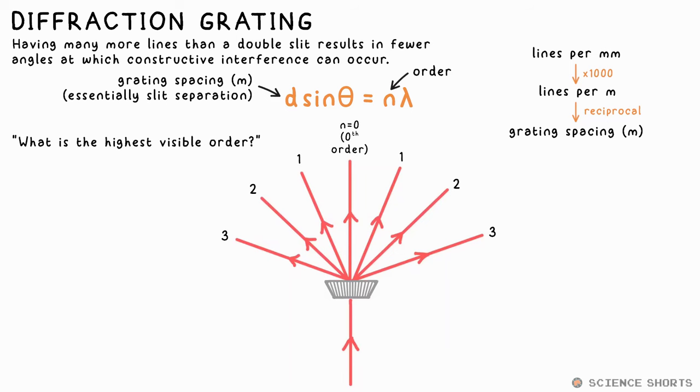You can also be asked to find the maximum visible order. In this case, we want to find out what order is made at 90 degrees. Sine 90 equals 1, so n equals d over lambda. Let's say this ends up being 3.8. There's no such order, so only orders up to 3 are visible. Also, they might try to catch you out by asking, hey, how many orders will be visible, rather than what is the highest order. In this case, you have to count the orders on both sides, including the zeroth order. So that will be 7 in this case. Very cheeky.